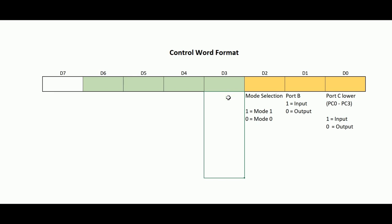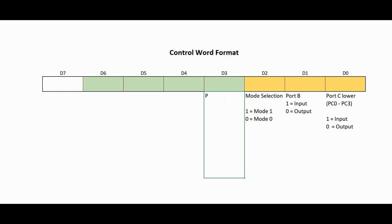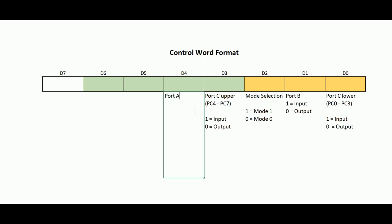Moving to Control Group A bits: D3 corresponds to Port C upper (PC4 to PC7). If D3 is 1, PC4 to PC7 will act as an input port; if D3 is 0, it will act as an output port. Bit D4 is for Port A — if D4 is 1, Port A is input; if D4 is 0, Port A is output.